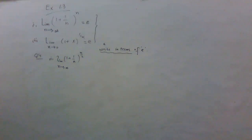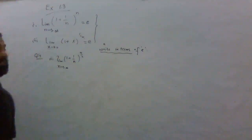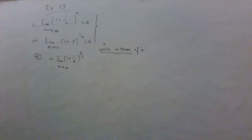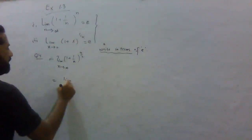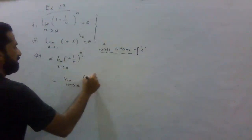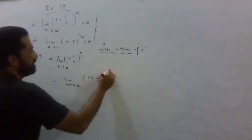These two formulas both equal e, which is equal to 2.71. Now here is the evaluation: limit as n approaches infinity of (1 + 1/n)^(n/2). We observe that the whole power here is 1/2, since n/2 = n × (1/2).